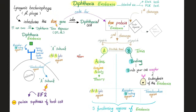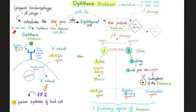Diphtheria exotoxin is a protein called the tox protein. Proteins are coded for by genes, known as the tox gene. Who introduced the tox gene into the diphtheria cell? The answer is lysogenic bacteriophage, known as beta phage. But the opposite is also true — we can inhibit this tox gene.